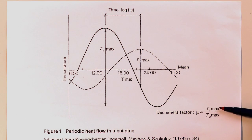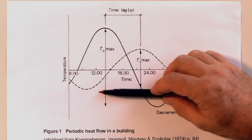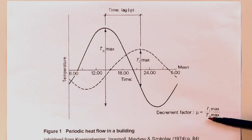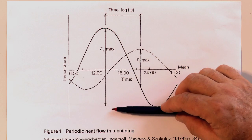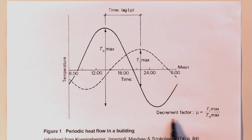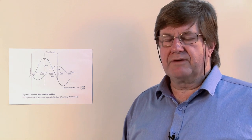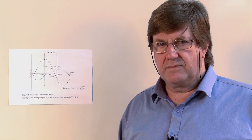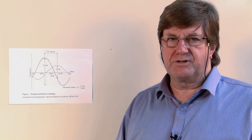The decrement factor is a representation of the temperature difference between the maximum and minimum outside and the maximum and minimum inside. So we have Ti, which is the internal temperature between the peak and the trough, and the outside, which is the peak and the trough. So the decrement factor is Ti over To. Usually in brick veneer construction we introduce some insulation, which also increases the temperature drop.